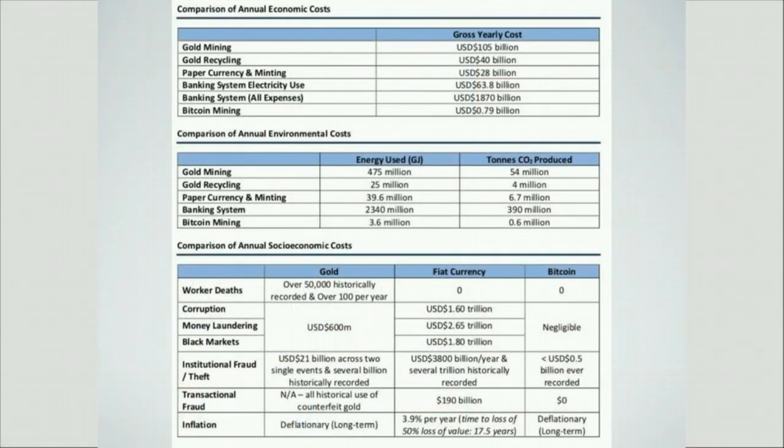This shows how expensive Bitcoin actually is — but you should put it in context. Based on estimates, worldwide gold mining costs about $105 billion a year, while Bitcoin is a fraction of a billion. So while Bitcoin's energy use is a real concern, it's still nowhere near the cost of mining gold.